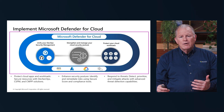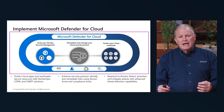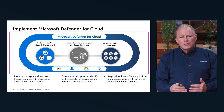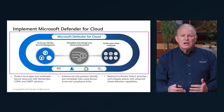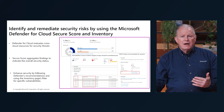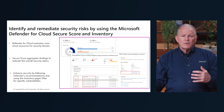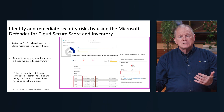Defender for Cloud, as that single pane of glass, is a great place to get information from your Azure, Google, AWS, and even on-premises environments — all in one location. It gives you a report based around the Defender for Cloud scorecard that summarizes this information, and you can customize these dashboards to meet your requirements.